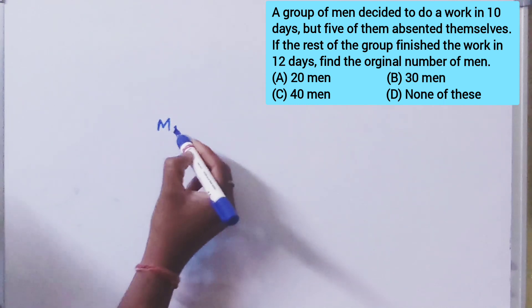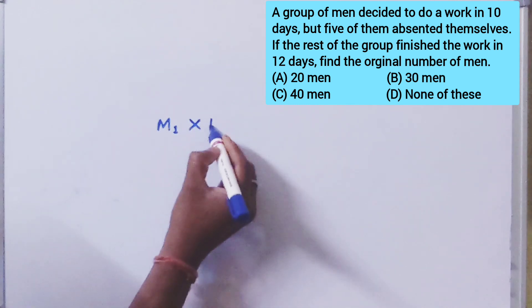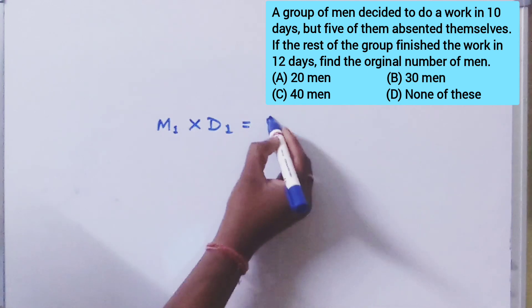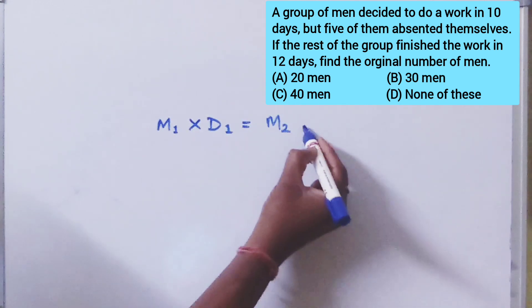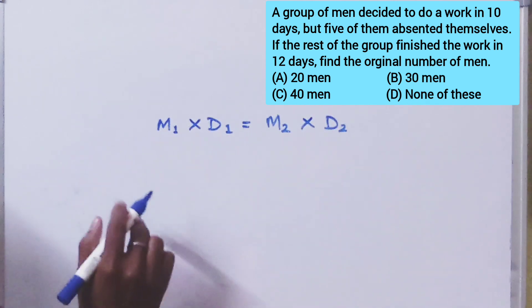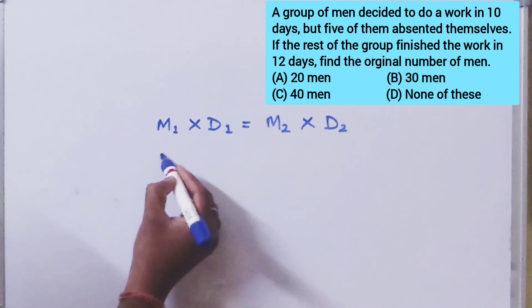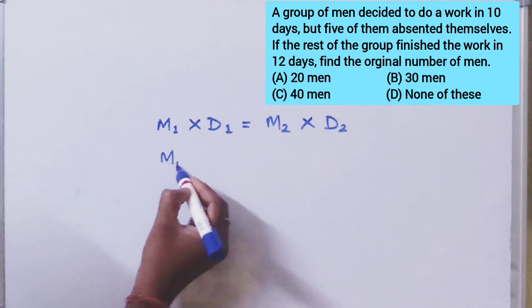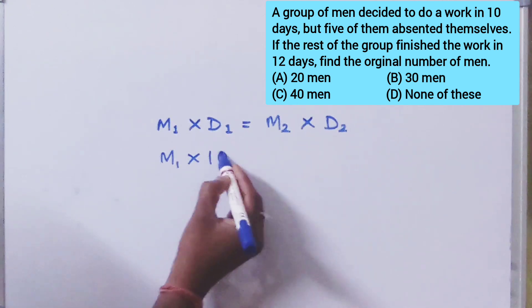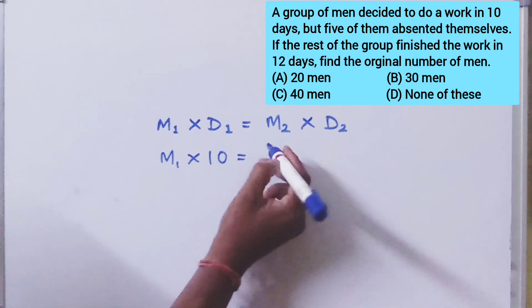Then, M1 into D1 is equal to M2 into D2. Then, M1 into D1 is equal to M2.